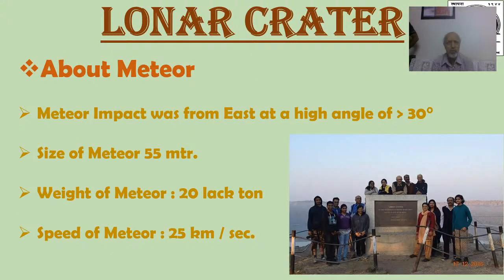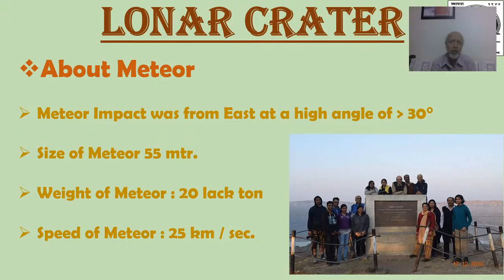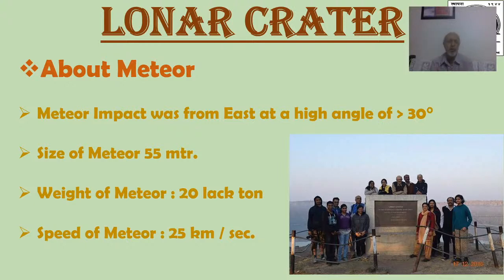Visitors to the Lonar crater should have basic information about the meteorite that came here long ago. The meteorite came from the east at a high angle of 30 degrees. Scientists speculate the meteor was about 55 meters in size, weighing around 20 lakh tons, and traveling at about 20 kilometers per second. This involved a tremendous explosion, and it is estimated that the energy released was equivalent to a 6-megaton bomb explosion.